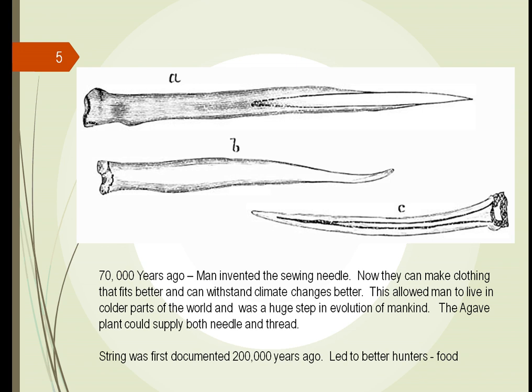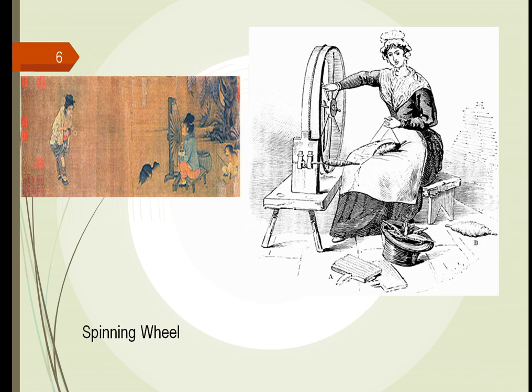There are plants like the agave plant — the plant that you make tequila from. You can take the sharp tips and make a needle. You can take the fibers from the leaves, remove the soft part, and make a thread. People learned that you can take these fibers and twist them together to get rope — a longer piece of fiber — relying upon their surface tension to hold them together.